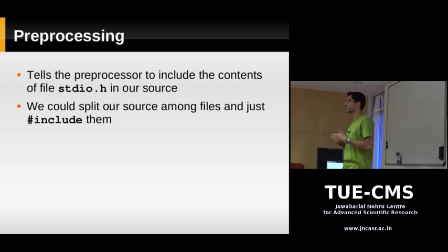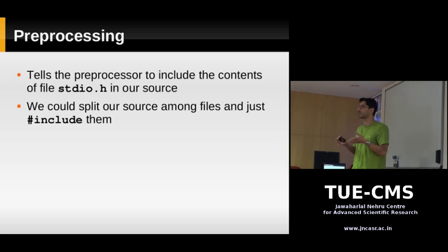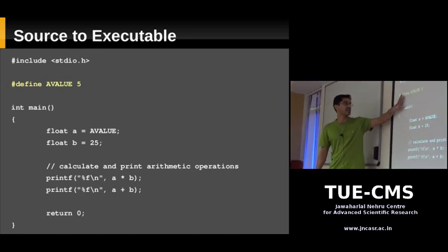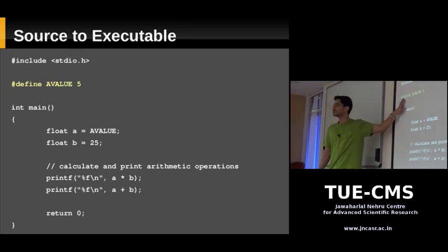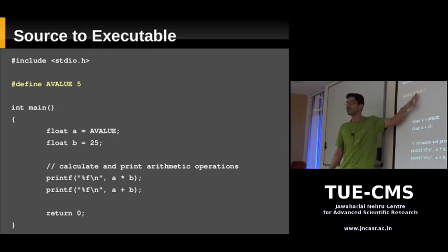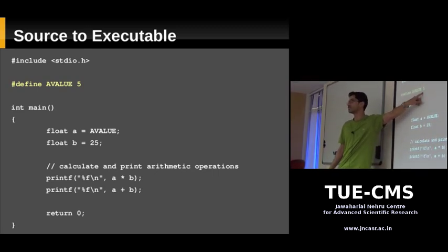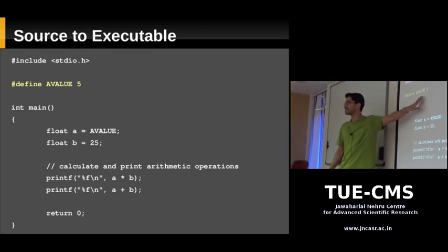So suppose you took your source code and split it into two files — you could just include one file in the other and the source code is just going to be placed there. It's a very simple operation; it just takes that text and puts it there. Now look at the second preprocessor directive: it's a #define with a name and some value. This is text substitution inside the preprocessor. What the preprocessor does is wherever in your program it finds the string AVALUE, it's going to replace it with the number five.